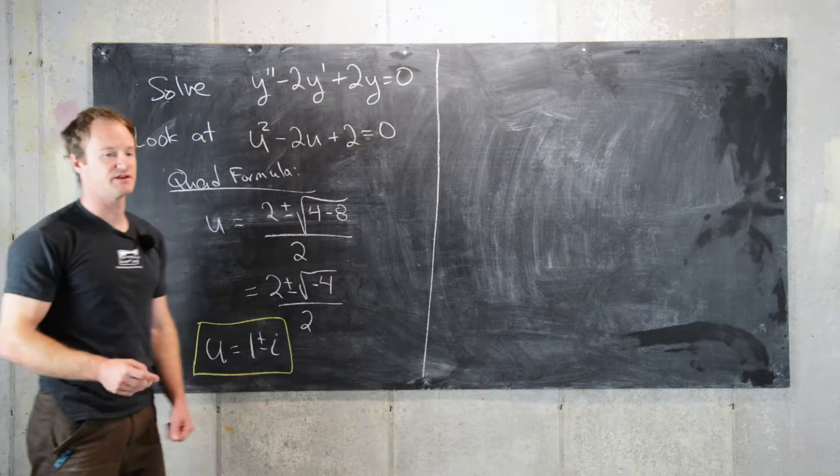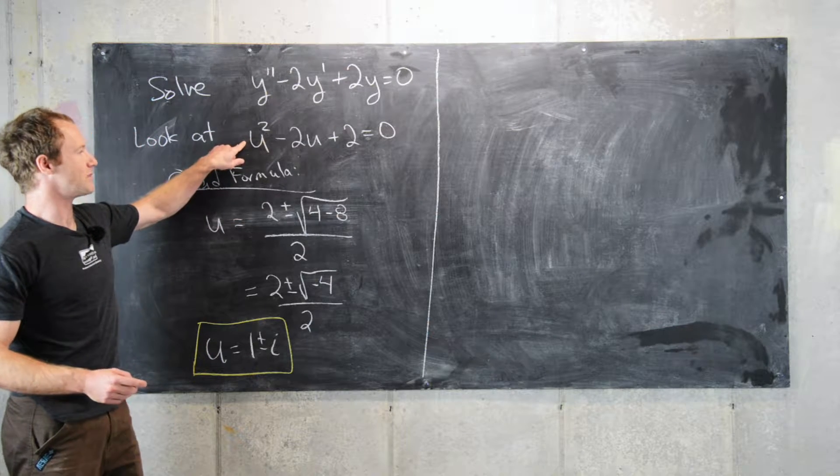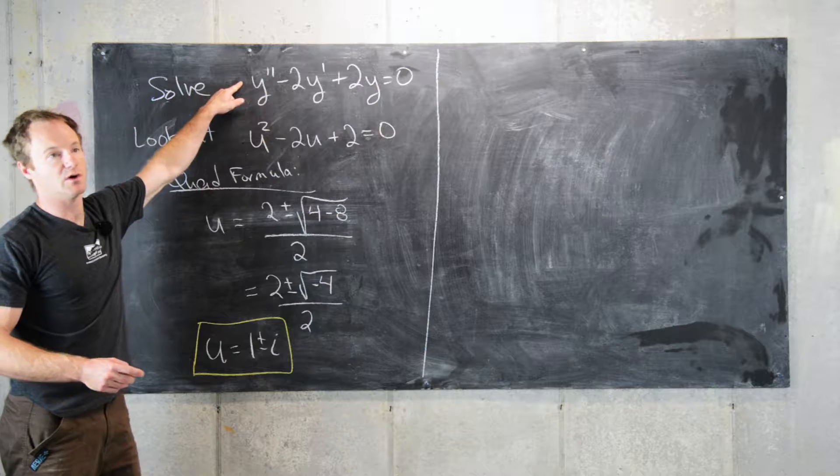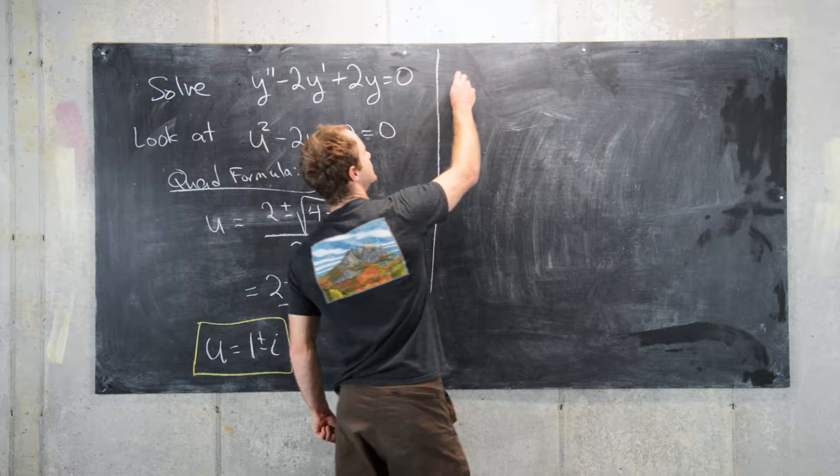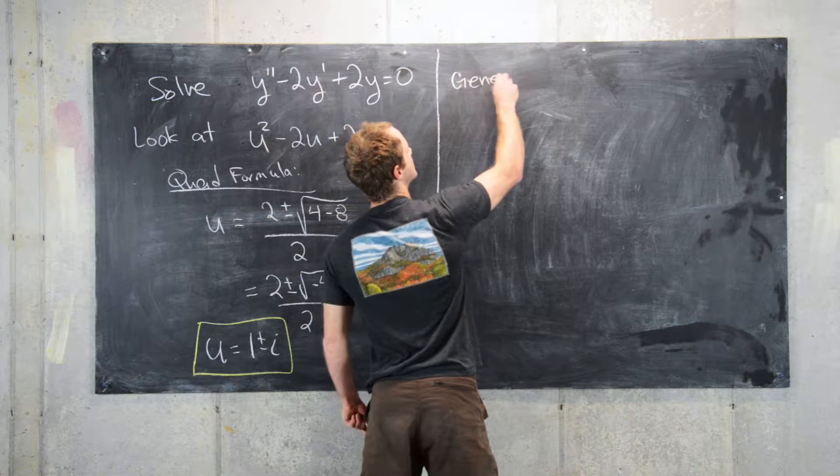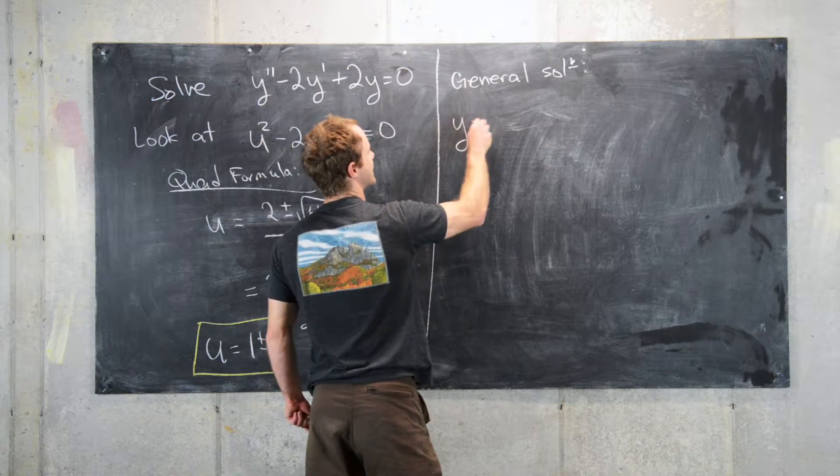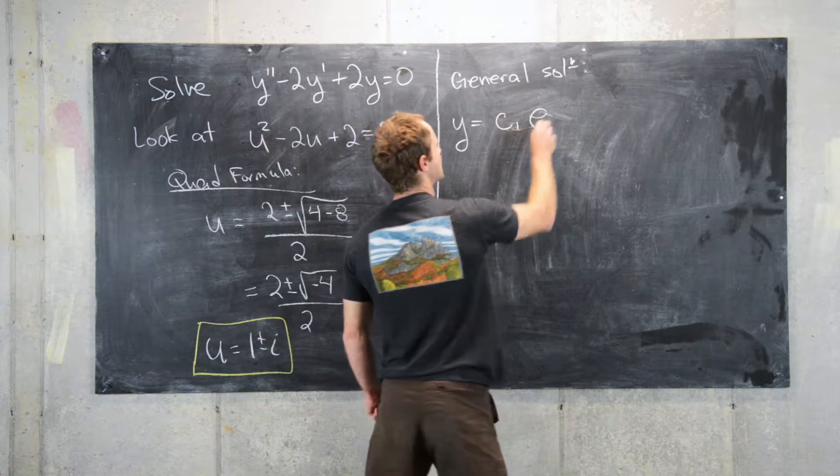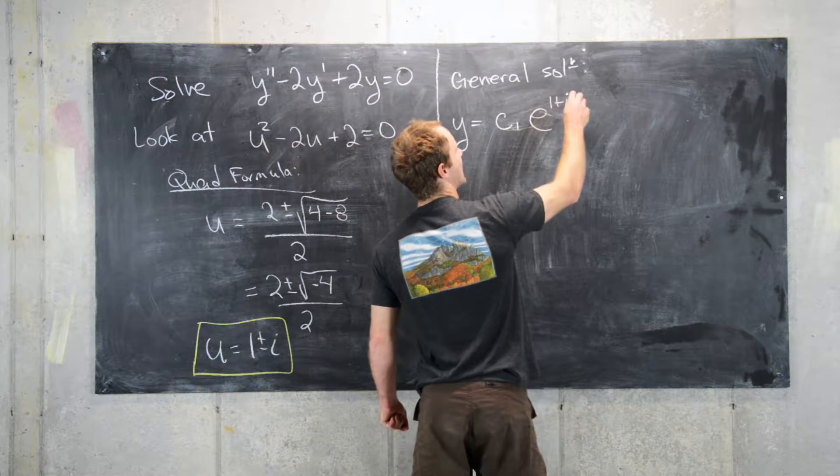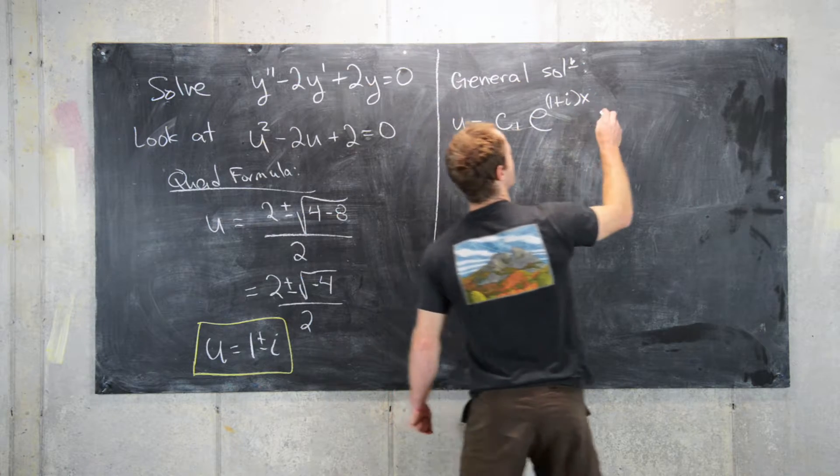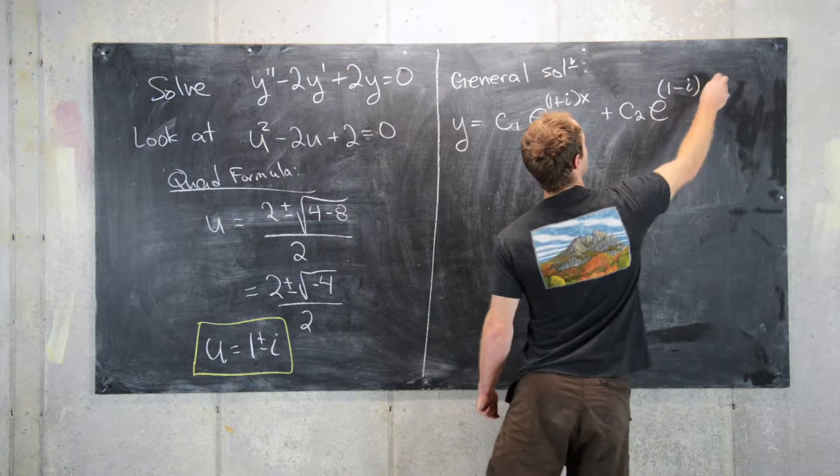So now using the general strategy for solving these, we know that the roots of this complementary polynomial to this differential equation will give us the solutions to this differential equation. So that means our general solution is of the following form. So we have y equals c1 e to one of these roots, so we'll take 1 plus i times x plus c2 e to the 1 minus i times x.